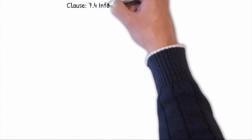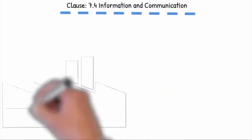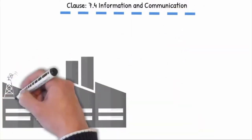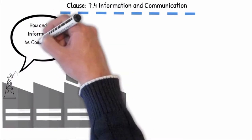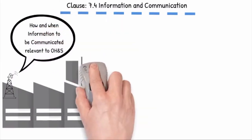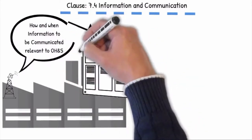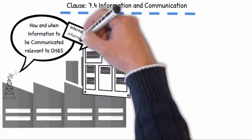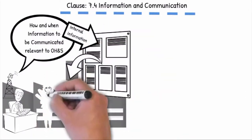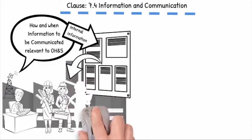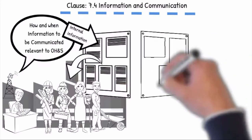Clause 7.4 Information and Communication: The organization shall establish, implement and maintain the process needed for the internal and external communications relevant to the OHS management system, including determining on what, when and to whom it will be communicated. Internal information relevant to the OHS management system shall be communicated to all levels and functions within the organization, on their duties and responsibilities, including changes to the OHS management system.